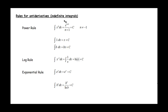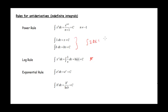Let's remind ourselves what the rules for indefinite integrals are. The power rule says if we take the integral of x to the n dx, we increase the exponent by 1 and divide by the new exponent. This only works when n does not equal negative 1. If we have the derivative equal to 2, the original function looks like 2x plus c. Don't forget your plus c — those are important.